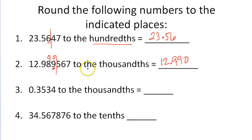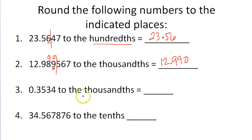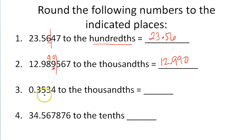I've rounded this number to the thousandths place. Let's take a look at the next example. I've got 0.3534, and I want to round this to the thousandths place. So here's the tenths place, here's the hundredths place, and here's the thousandths place.